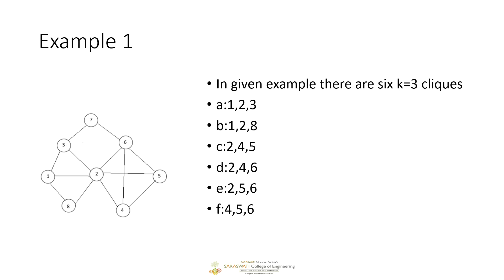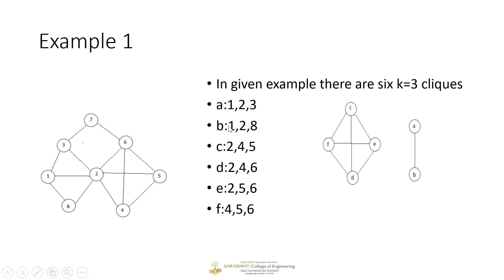How many communities do we have? Look at clique A and clique B — they have nodes 1 and 2 in common. Clique A has nodes 1, 2, 3 and clique B has nodes 1, 2, 8 — they share 2 common nodes. So clique A and clique B form a community.